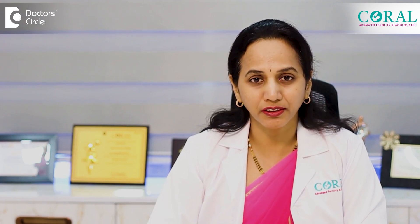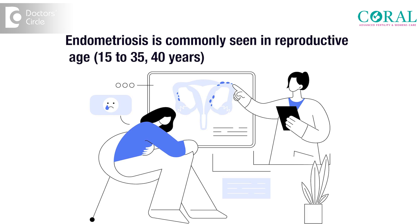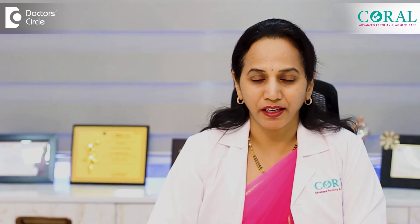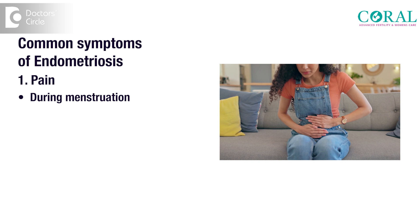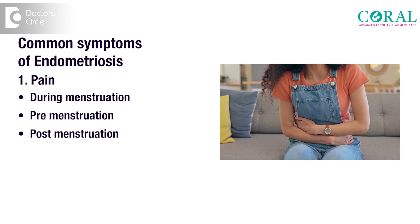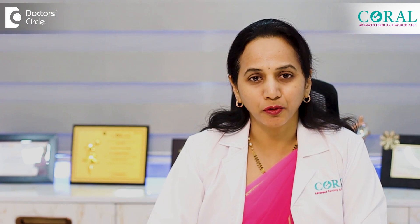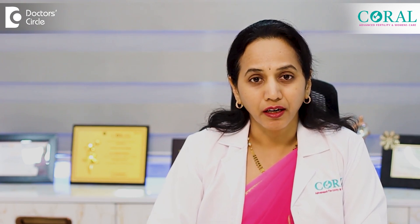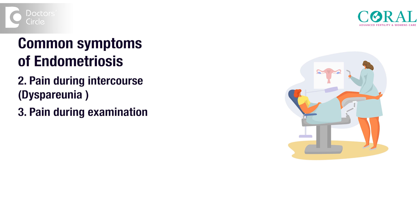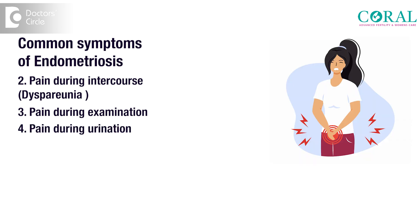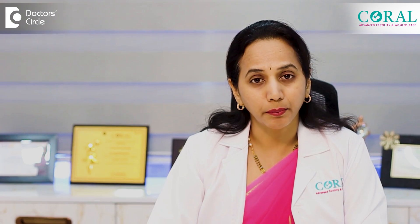This condition is called endometriosis and it is commonly seen in the reproductive age group of females, that is between 15 to 35–40 years. Common symptoms of endometriosis are pain. It presents itself during menstruation, pre-menstruation, or post-menstruation. They can also experience pain during intercourse — that is dyspareunia — pain during menstruation, pain during examination, and sometimes pain during urination because it can be present inside the bladder as well.